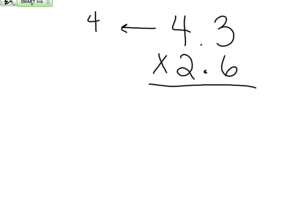So 2 and 6 tenths rounded to the nearest whole number would be what? Since 6 is the neighbor to the whole number and the 6 tells me to round up, it would be 3.